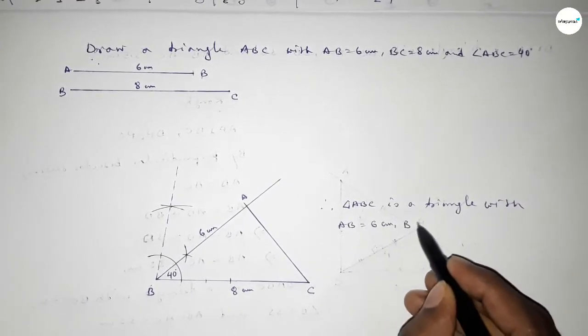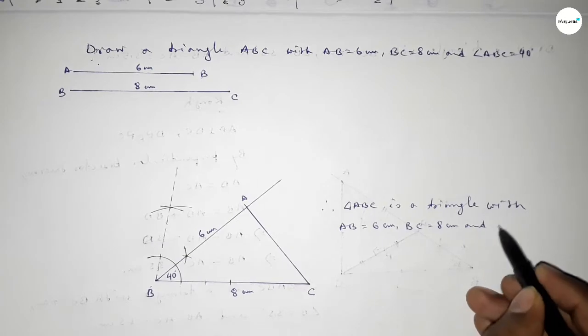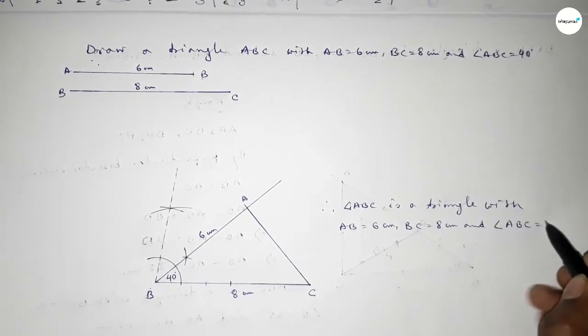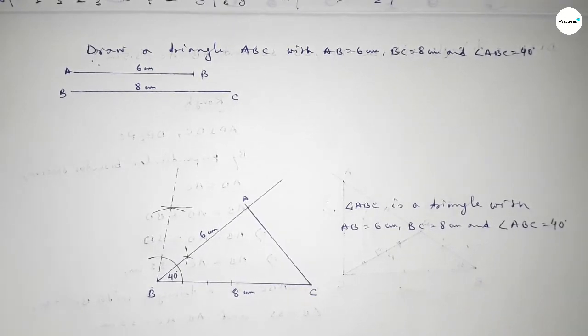Therefore, triangle ABC is constructed with AB equal to 6 centimeters, BC equal to 8 centimeters, and angle ABC equal to 40 degrees. That's all — thanks for watching. If this video is helpful to you, please share it with your friends.